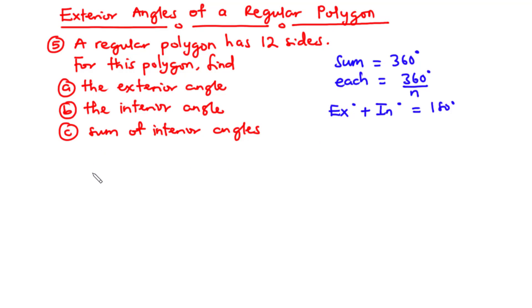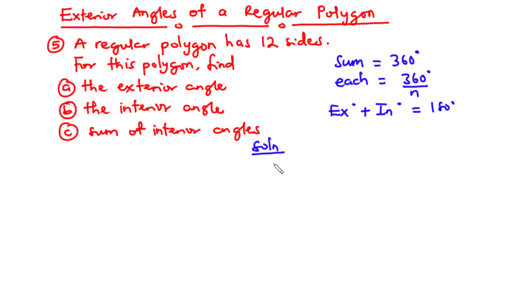Also note that the exterior angle plus the corresponding interior angle sums to 180 degrees. So if you have the exterior angle, you can use this relationship to find the interior angle. Let's solve example 5: a regular polygon has 12 sides — find A) the exterior angle, B) the interior angle, and C) the sum of interior angles.